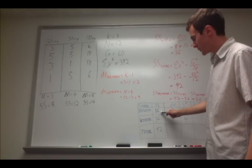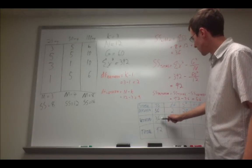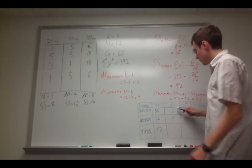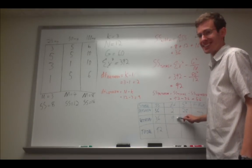So, between sums of squares, 56. Within sums of squares is 36. Total is 92. Degrees of freedom, which I calculated here. Between is 2. Within is 9.